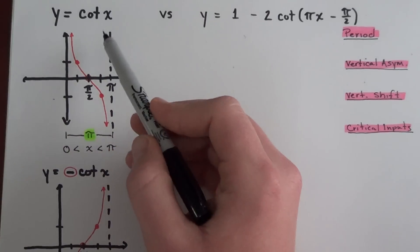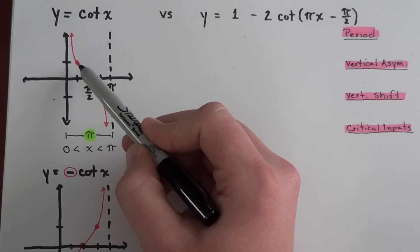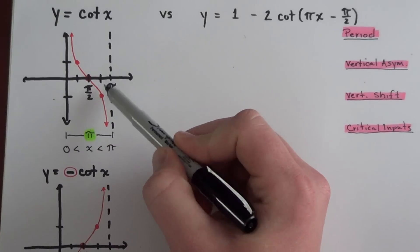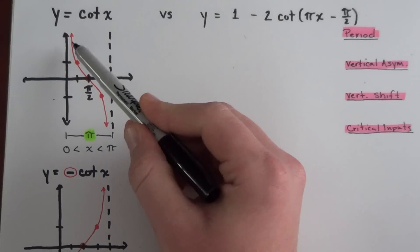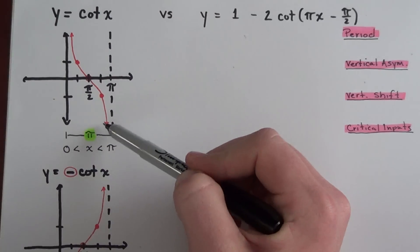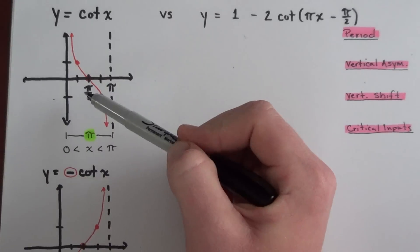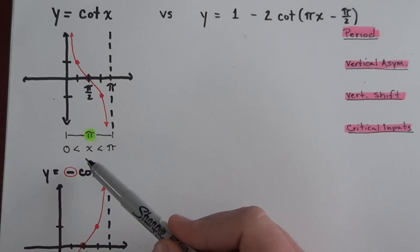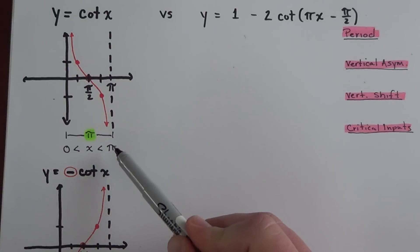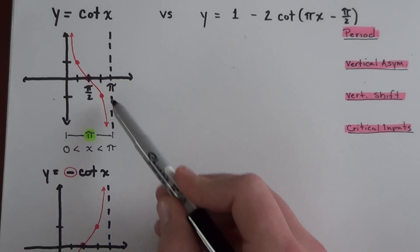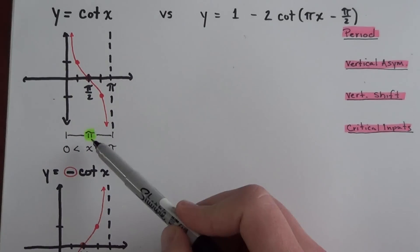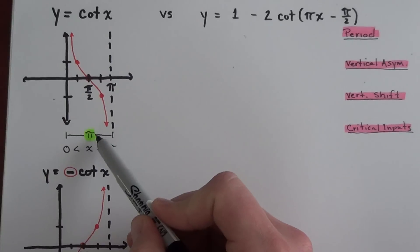For y equals cotangent of x: cotangent of pi over four gives positive one, cotangent of pi over two gives zero, and cotangent of three pi over four gives negative one. When you connect those points with a smooth curve, you see the regular positive cotangent curve forming. Its period is a length of pi, going from zero to pi.